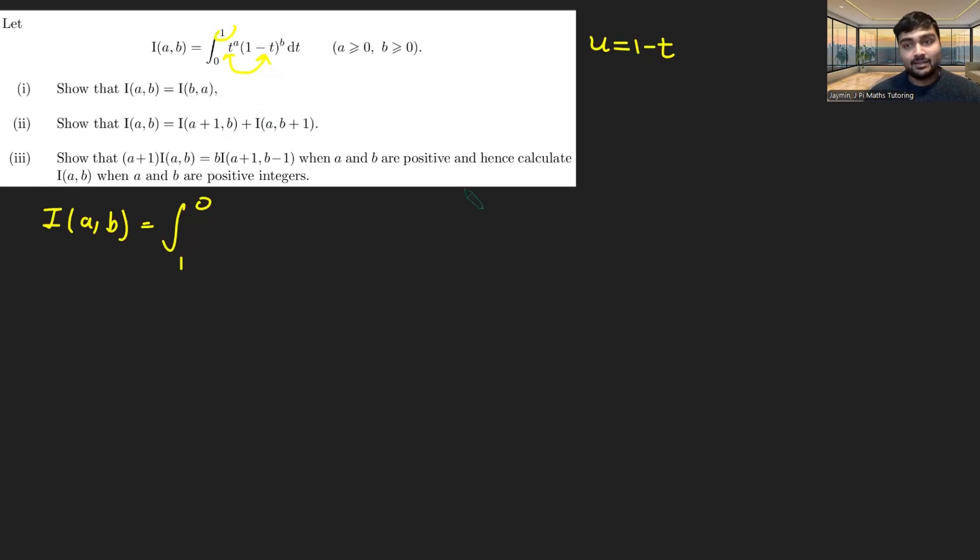We've got t to the a, and if we rearrange this, we get t equals 1 minus u. So it's going to be 1 minus u to the a times 1 minus t, but 1 minus t is u. So this will be u to the power of b. And then dt is simply going to be minus du. So times minus du.